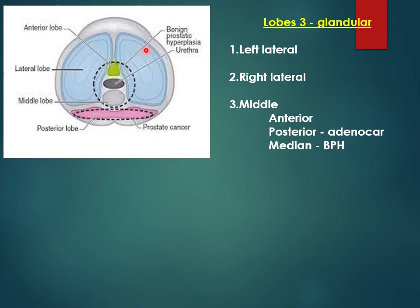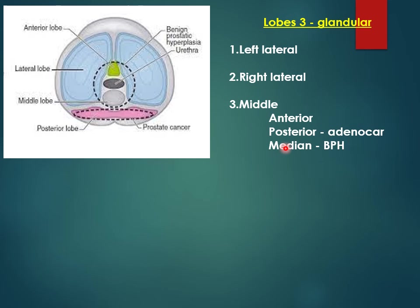This slide shows the cross-section of the prostate. It consists of three lobes: two lateral lobes and a middle lobe. The middle lobe is subdivided into an anterior part, a posterior part, and a middle part — the median lobe — which surrounds the urethra. The posterior lobe is the part from which 70% of adenocarcinomas arise, whereas the median lobe is the site of origin of the majority of benign prostatic hypertrophy.